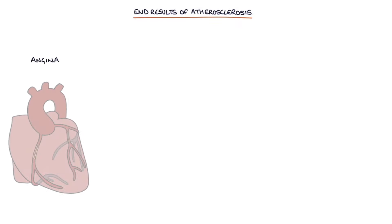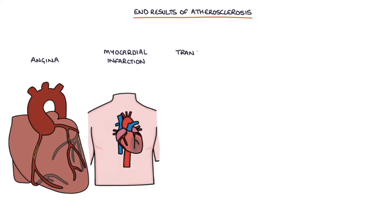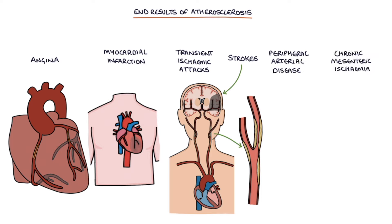There are several end results of atherosclerosis. These include angina, myocardial infarction, transient ischemic attacks, strokes, peripheral arterial disease, and chronic mesenteric ischemia.